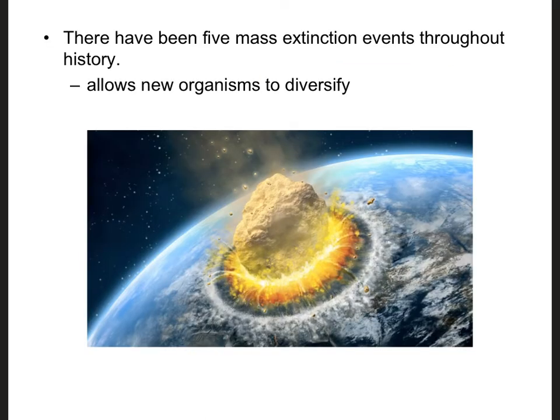Throughout history there have been five known mass extinction events. What's important about these extinction events is that they allow new organisms to diversify. The extinction event you're probably most familiar with is the KT extinction, or the Cretaceous-Tertiary, which killed the dinosaurs. Some smaller mammals were able to burrow underground and survive, and when they came back out there were no more dinosaurs preying on them, so they were able to diversify. That's why we are currently living in what we call the time of the mammals.